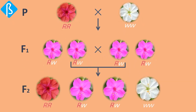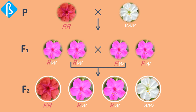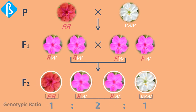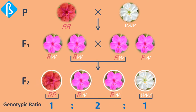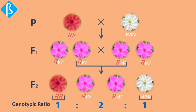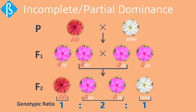When this F1 generation was allowed to self-fertilize, it gave red, pink, and white flower plants in a ratio of 1:2:1, which was different from the 3:1 ratio of simple Mendelian experiments. This type of allele dominance shown in the F1 generation is called incomplete or partial dominance, which gives an intermediate phenotypic generation.